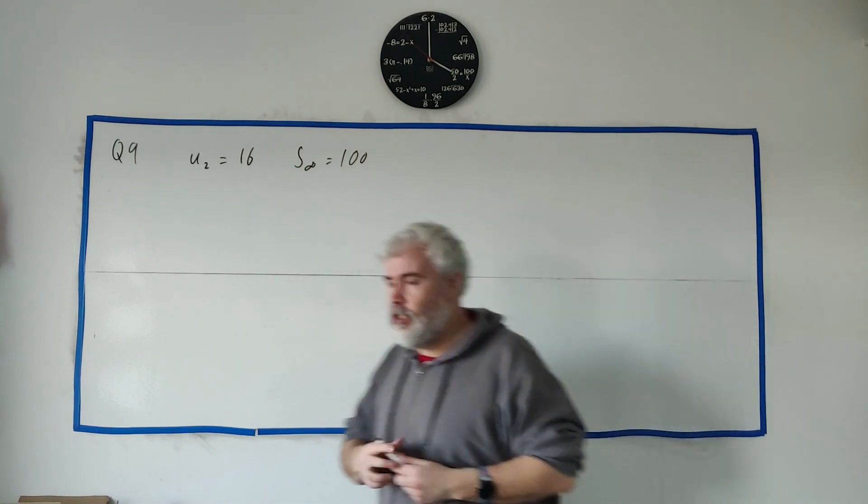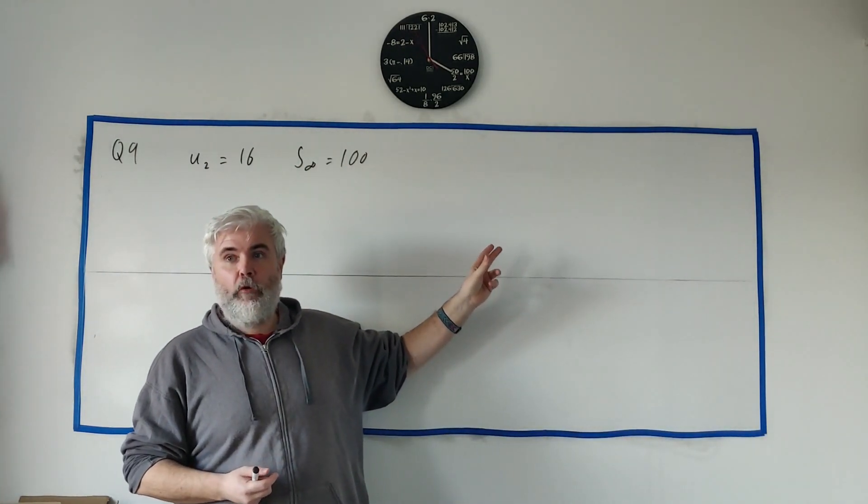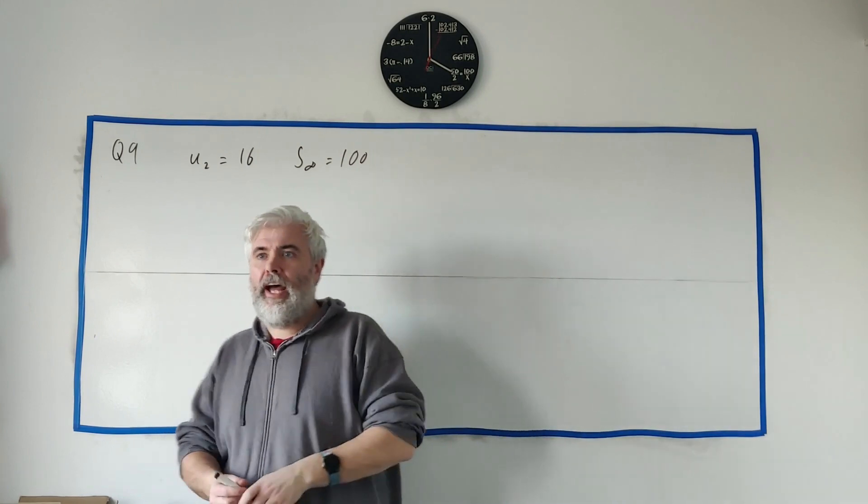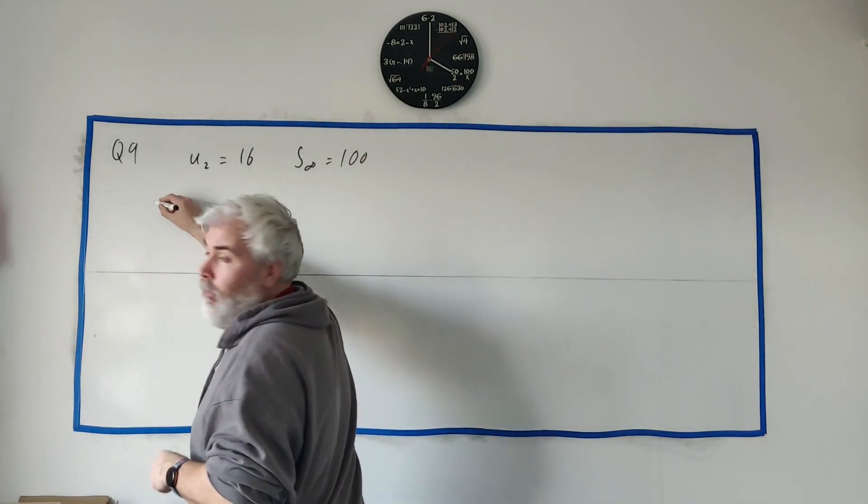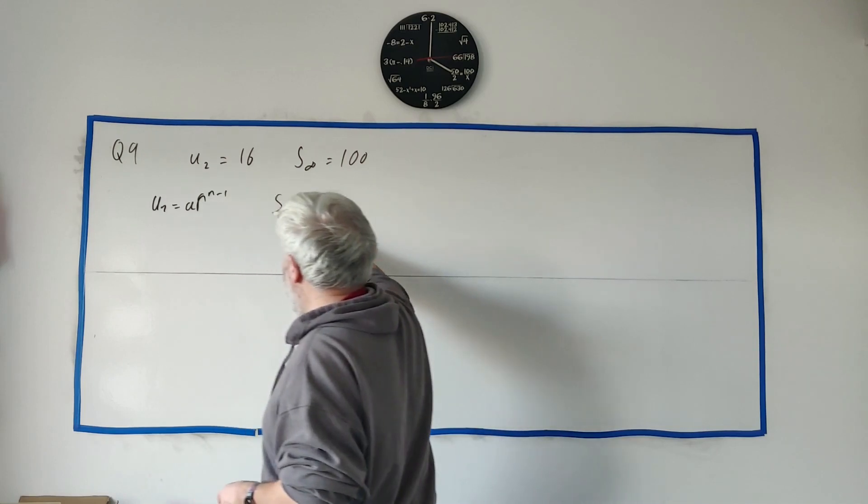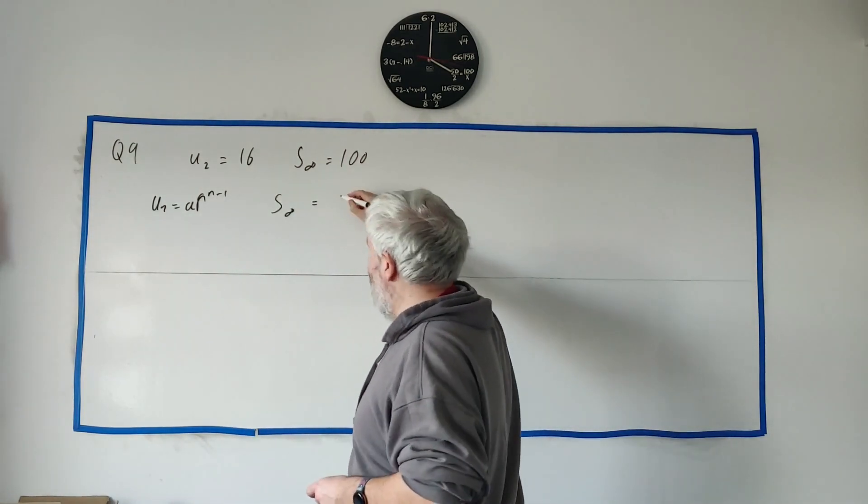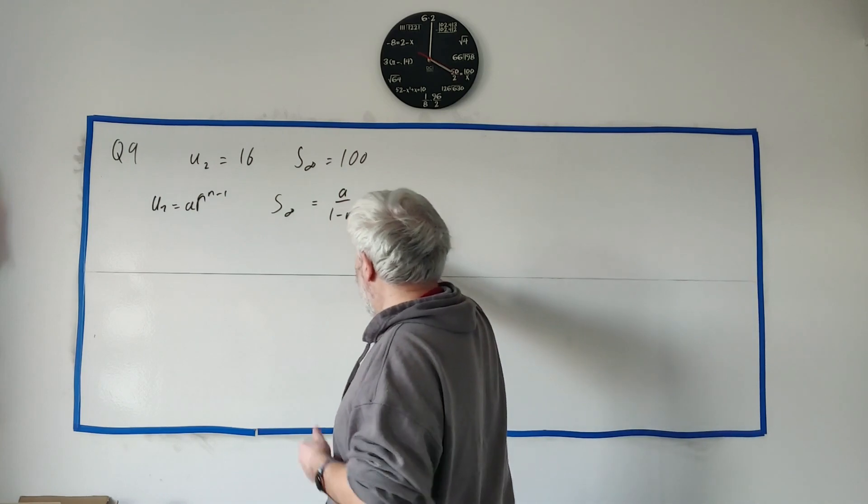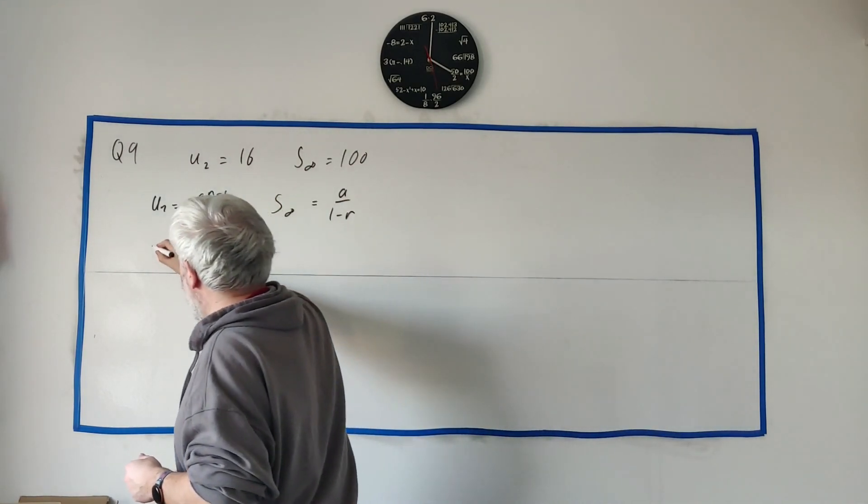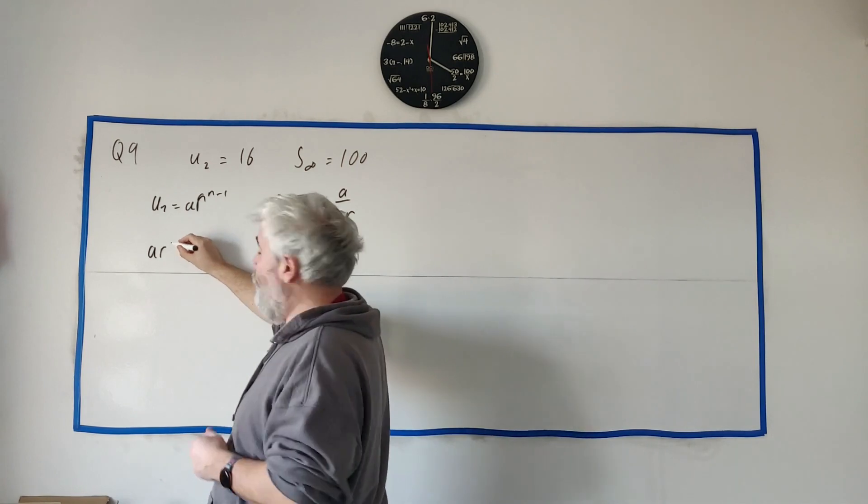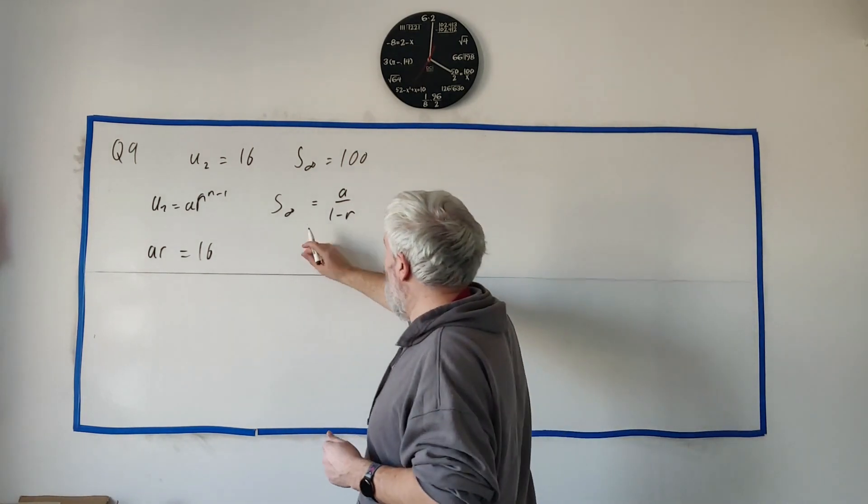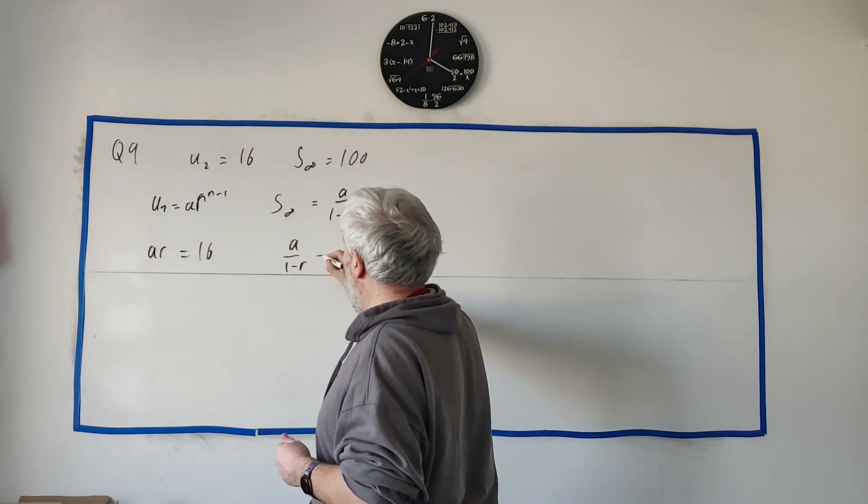Okay, so how do we do this? First thing, let's go to our formulas and we'll get the formula for Un. Un is equal to ar^(n-1) and S-infinity. Let's write both of them down. So Un is equal to ar^(n-1) and S-infinity, which is one of my favourite equations, is a/(1-r). Okay, let's go ahead and fill in some of these numbers. So this second one here is ar^(2-1) is ar^1 is equal to 16. That gives us something with a and r in it. This one here tells us that a/(1-r) is equal to 100.